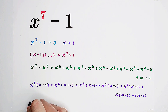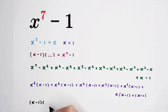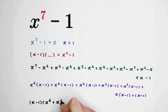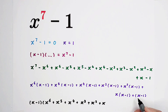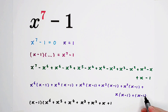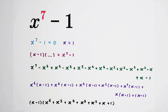So the answer is just x minus 1 times: x to the power of 6, plus x to the power of 5, plus x to the power of 4, plus x cubed, plus x squared, plus x, and plus 1 — don't forget. Because the last term is not 0, it is plus 1 times x minus 1. So this is the factorization; this is our answer.